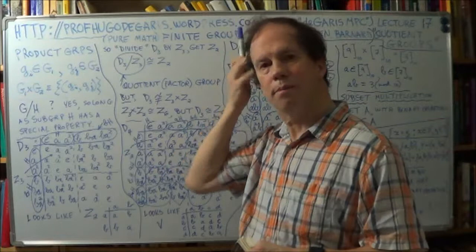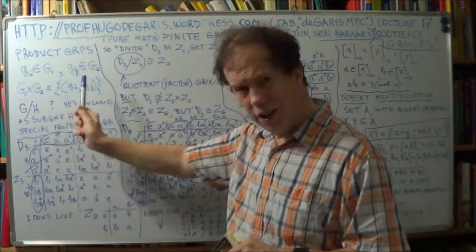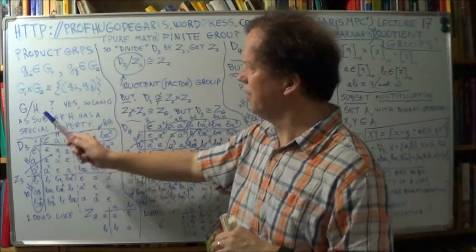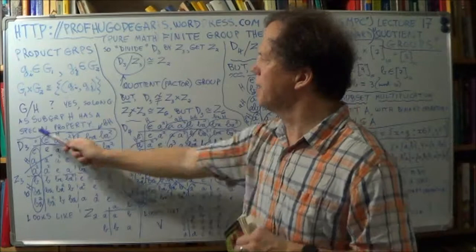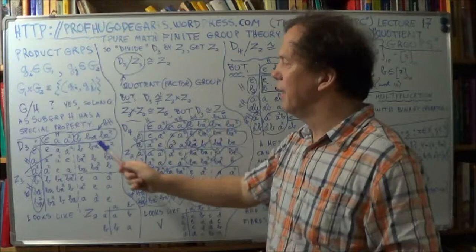Now, what about the other way? Is it possible to have some kind of division? Like, can you take a group and divide it by another group? And the answer is yes, so long as this group that you're dividing by, in fact, it'll be some kind of subgroup of this, it has to have a certain property, and I'm still being deliberately vague because we're leading up to it.